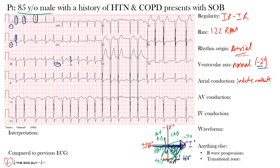For AV conduction, the normal PR interval in adults is 120 to 200 milliseconds, or three to five small boxes. The PR interval varies here because we have multiple ectopic atrial foci each firing differently. However, we have one-to-one atrial-to-ventricular conduction with no dropped beats, so AV conduction is considered normal, even though the PR interval changes with each different atrial focus.